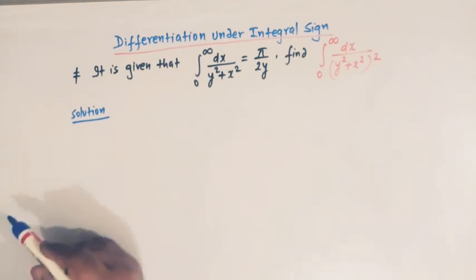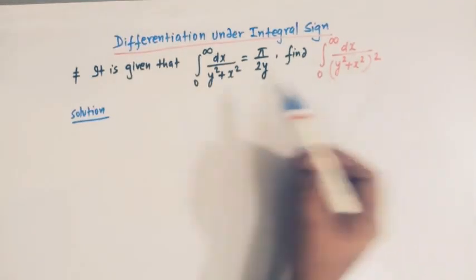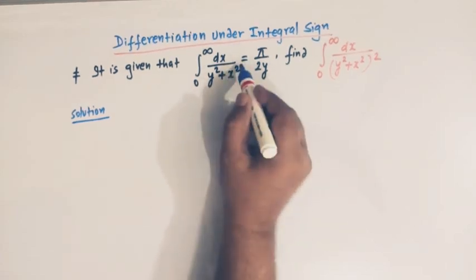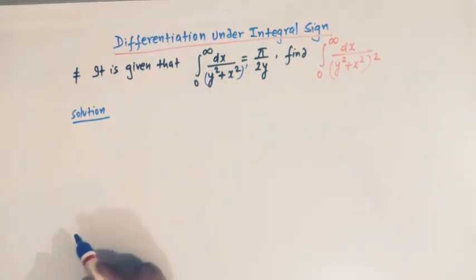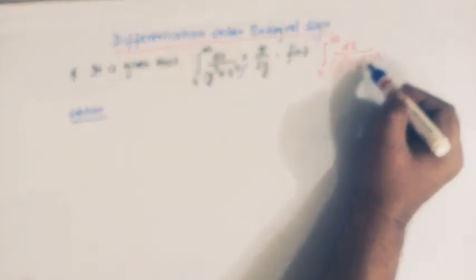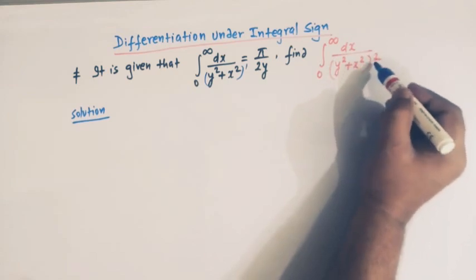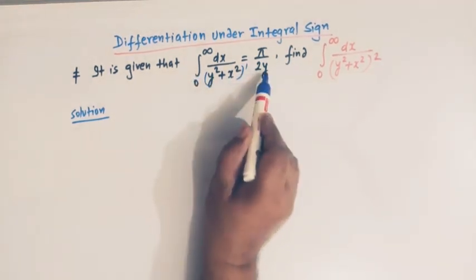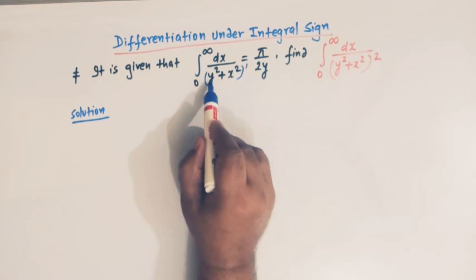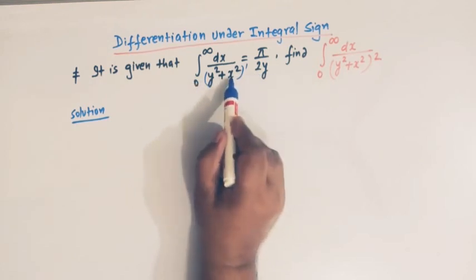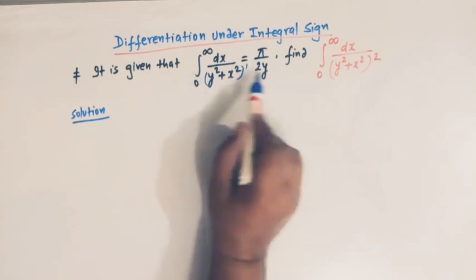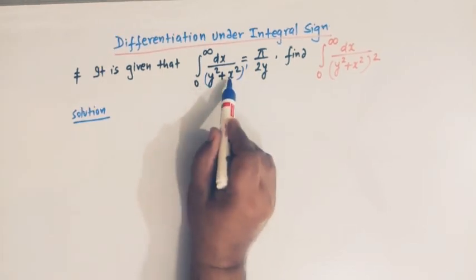We observe that here we have the factor y squared plus x squared with power 1, whereas in the target integral the denominator is (y squared plus x squared) raised to power 2. So what we will do is differentiate both sides with respect to y — that is, we partially differentiate both sides with respect to y, keeping x constant.